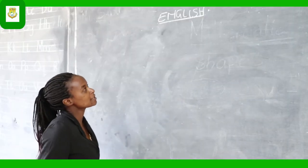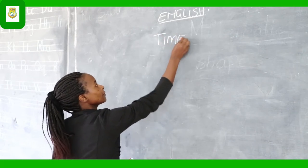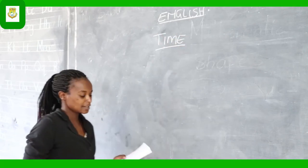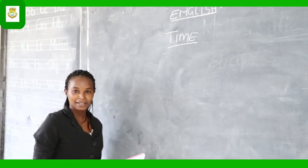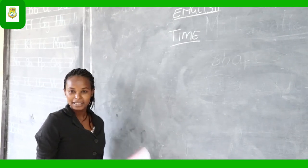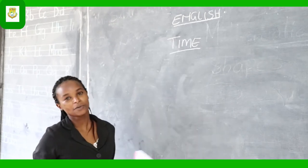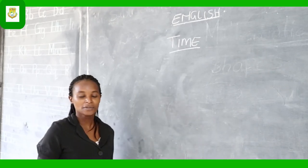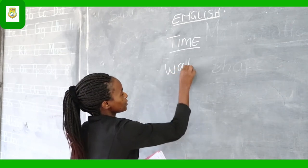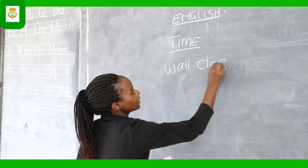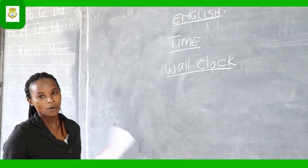Today we are going to study about time. In time, we are going to deal about how time relates to the activities of our day. Each and every day is divided with time, and for us to know how to manage our time, we are going to use something that we call a clock. That's what we are going to use today on our lesson — how to study time using our clock.